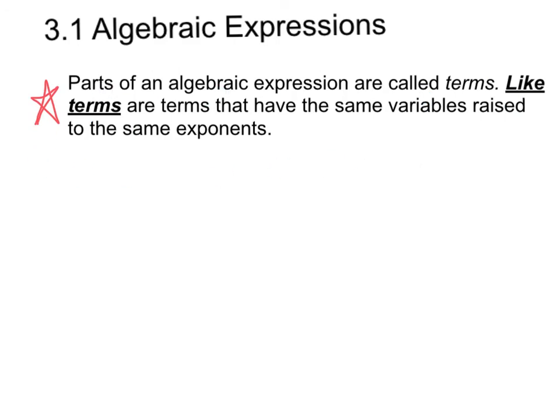Parts of an algebraic expression are called terms. Like terms are terms that have the same variables raised to the same exponents. A lot of students think that like terms just have the same variable — they do, but they also have the same exponent. So please make sure you understand that like terms have the same variables raised to the same exponents.